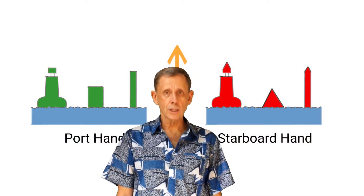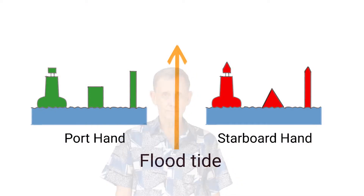Let's take a look at what they look like. These are examples of floating beacons — floating buoys, spars, and cans — and they're secured in place by a chain anchored to the seabed. Red beacons are called starboard hand beacons because you keep them on your starboard hand, and green beacons are port hand beacons.